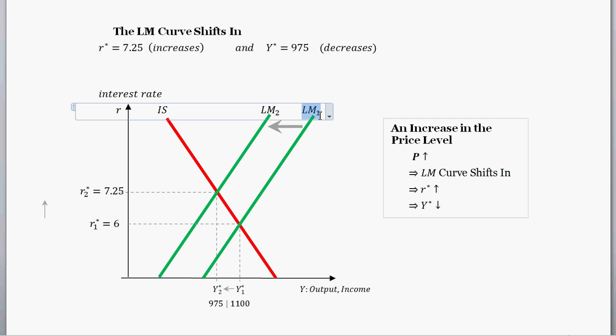So we then, prices increase. So that's represented by an inward shift in the LM curve with the new equilibrium real interest rate and equilibrium output. So given the increase in the price level, the LM curve shifts in, interest rates increase, output decreases.